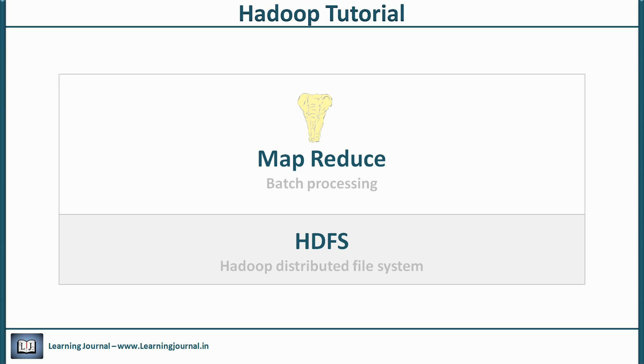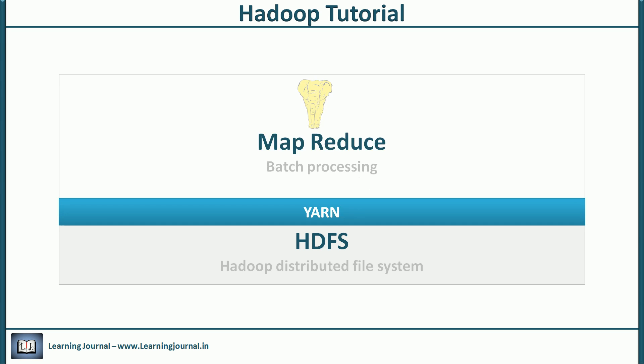Later, people realized that MapReduce is not enough to solve many big data problems. They wanted to take advantage of HDFS and allow other programming models — other execution engines — on top of HDFS. That's how the open source community started the YARN project. The idea was to take resource management and job scheduling responsibilities away from the old MapReduce engine and give it to a new component. So YARN is a middle layer between HDFS and the MapReduce engine.